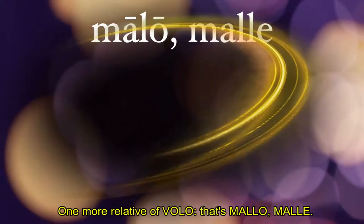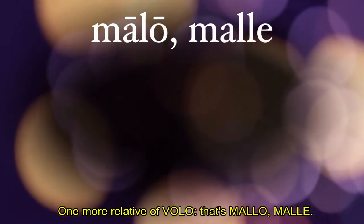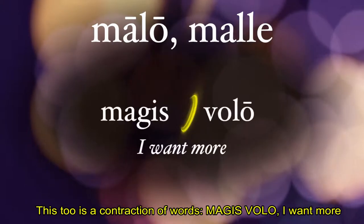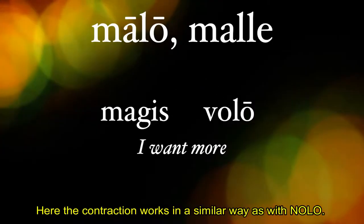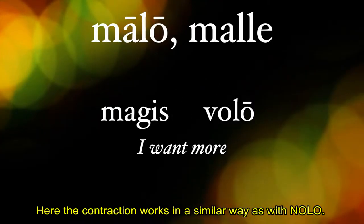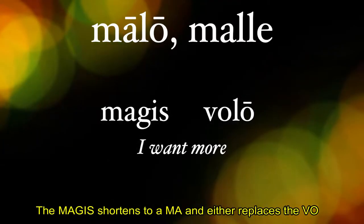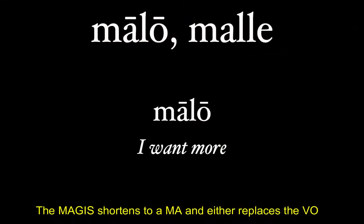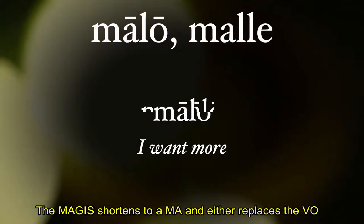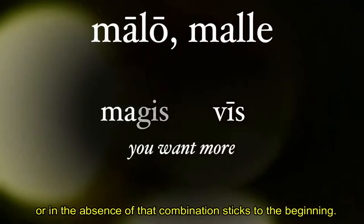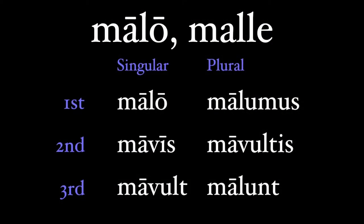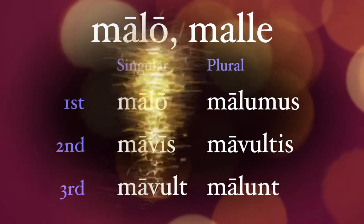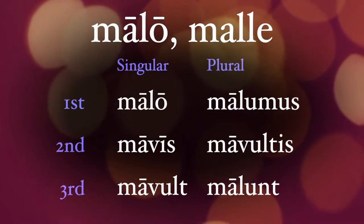One more relative of volo, and that's malo malle. This too is a contraction of magis volo, meaning 'I want more.' The contraction works similarly to nolo — magis shortens to 'ma-' and either replaces the 'vo-' or, in the absence of that combination, sticks to the beginning. The forms are: malo, mavis, mavult, malumus, mavultis, and malunt.